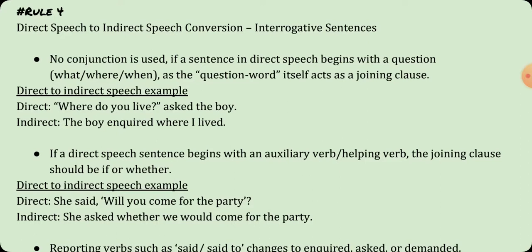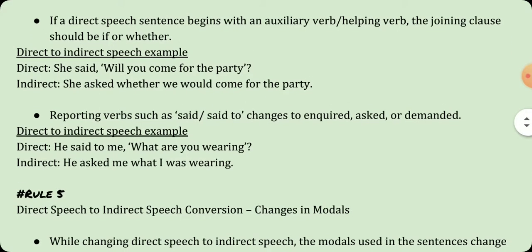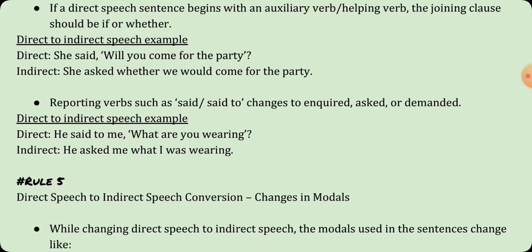If a direct speech sentence begins with an auxiliary verb or helping verb, the joining clause should be 'if' or 'whether.' For example, 'She said will you come for the party?' in indirect speech becomes 'she said whether we would come for the party.' You can also write 'she asked if we would come for the party.' Reporting verbs such as 'said' or 'said to' change to 'inquired,' 'asked,' or 'demanded.' For example, 'He said to me what are you wearing?' becomes 'he asked me what I was wearing.'